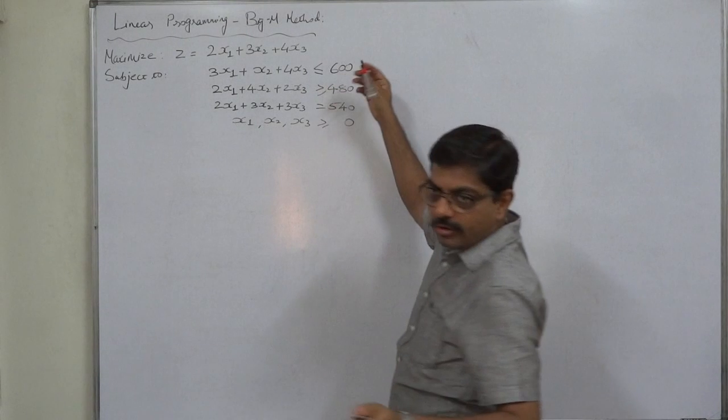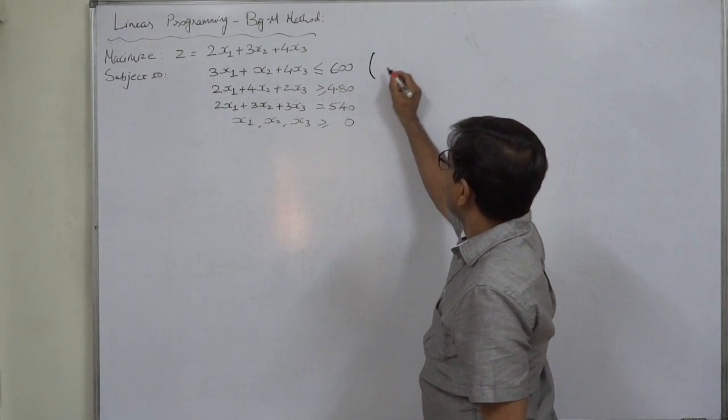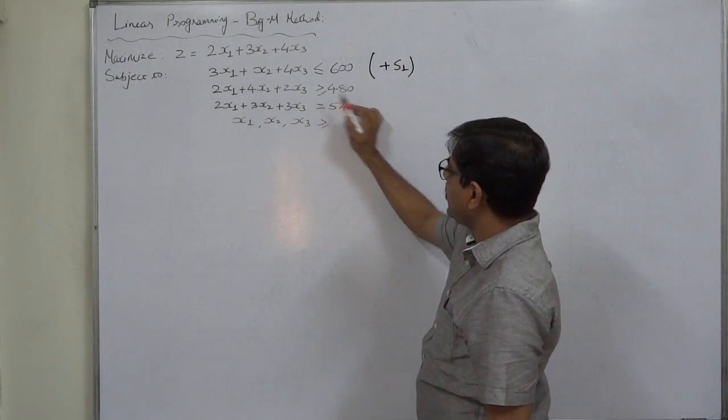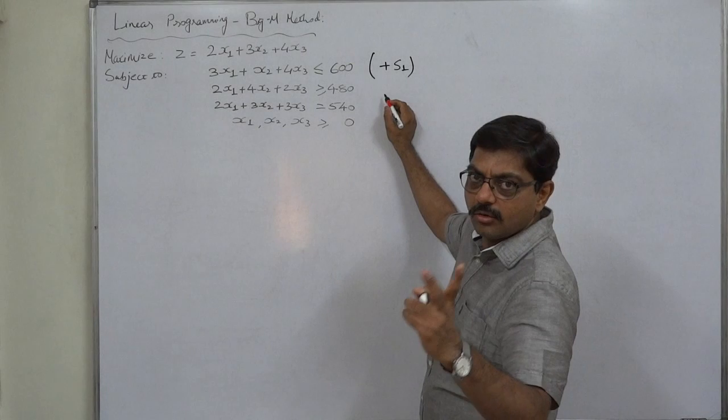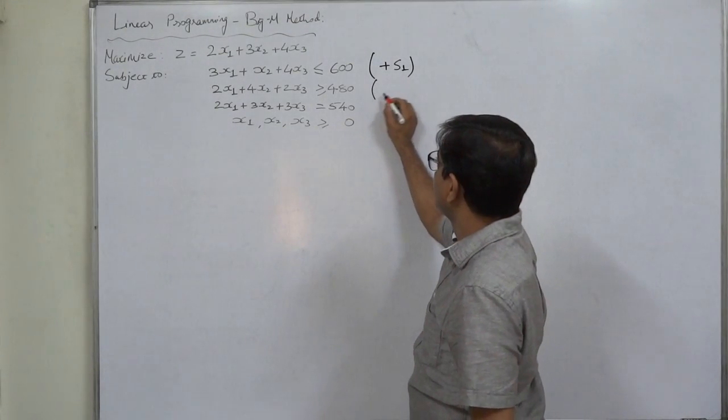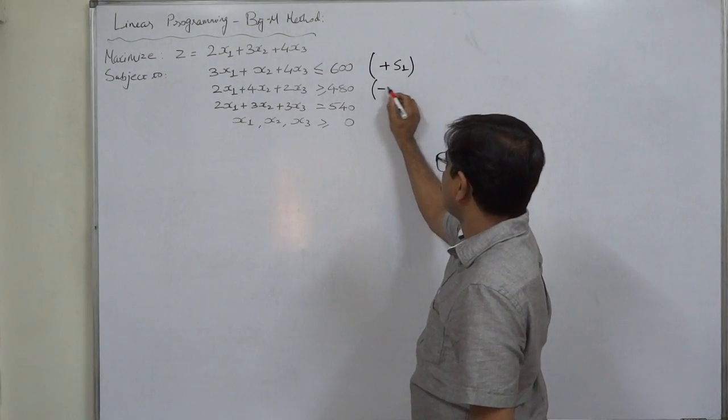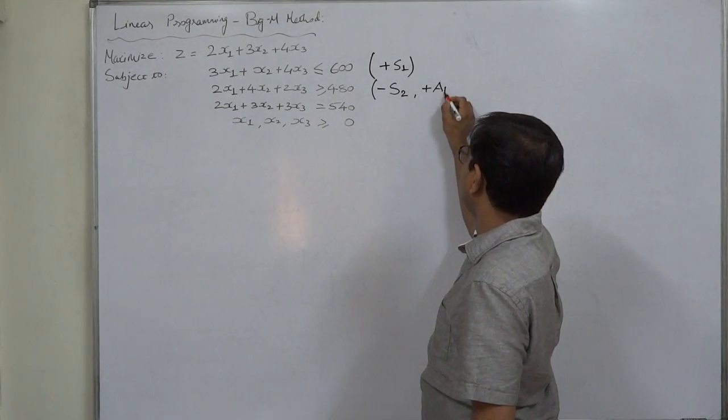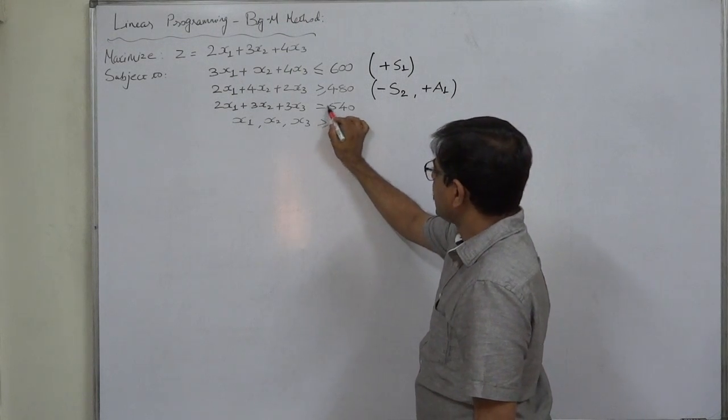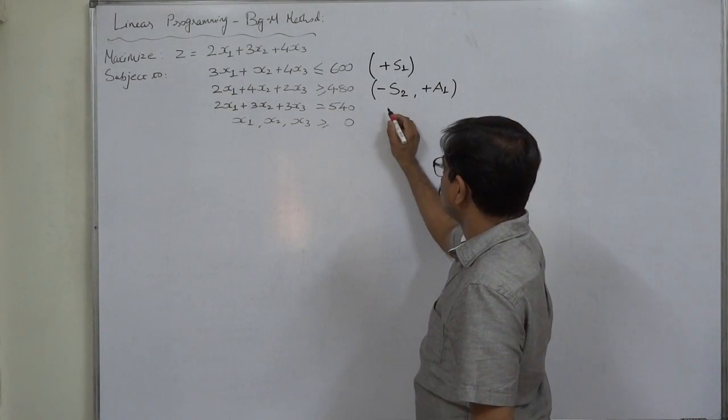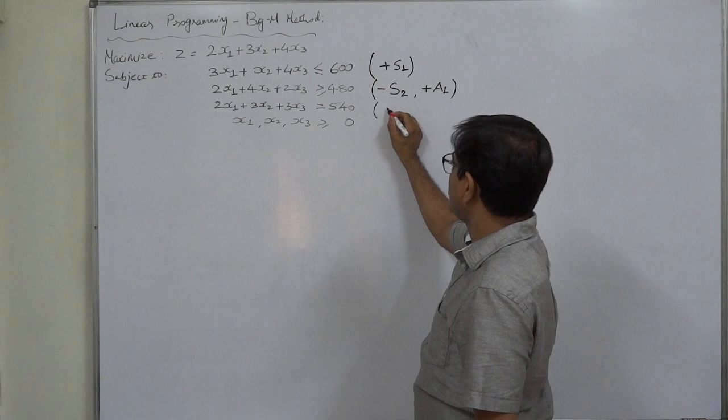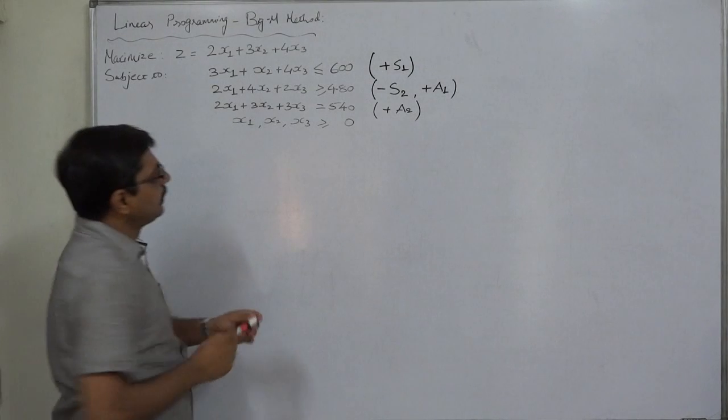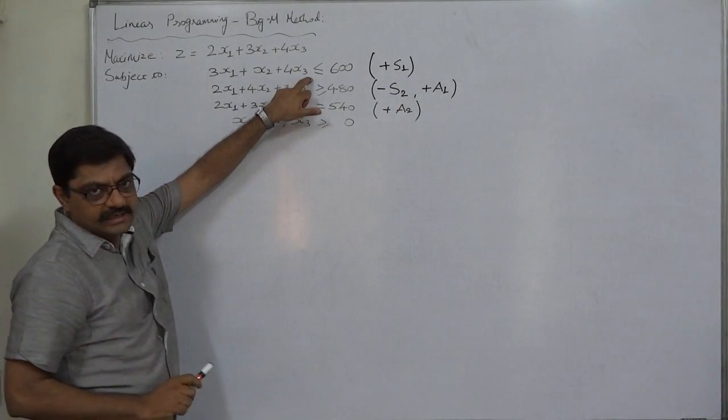The first constraint is less than or equal to, so we will add slack variable. The second is greater than or equal to, so two virtual variables will be there: we will subtract slack variable and add artificial variable. In the equals to case, we add only artificial variable.